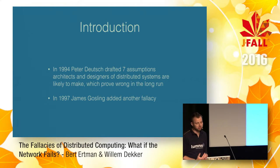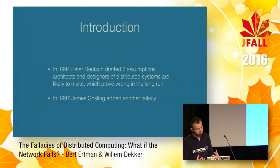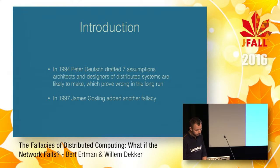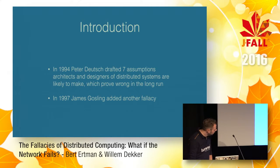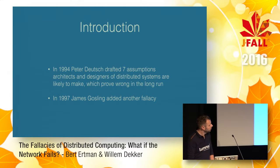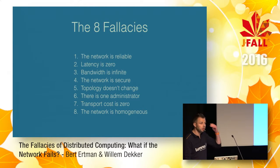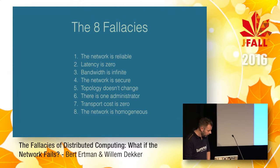When we start designing such systems, we mostly start on a single system, run a couple of tests, and even if we build a distributed prototype, we run it from a single box or a very isolated environment. We don't see what actually happens when we put these systems under stress in production. A couple years later, James Gosling, the father of Java, added another fallacy, making eight fallacies of distributed computing. If you haven't read the paper, it's a highly recommended read.